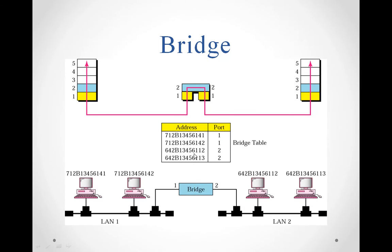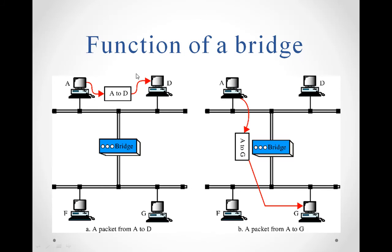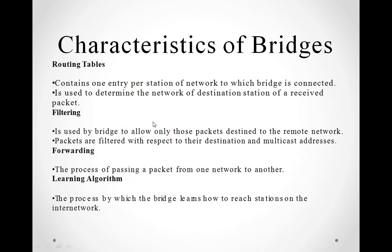To complete the transfer, the bridge makes use of the bridge table to identify the respective source and destination computers. If the computer has to transfer a message within a single LAN, it does not require a bridge. Messages transferred within a network without the use of the bridge are filtered from those which need the bridge for transfer — this is the filtering function.